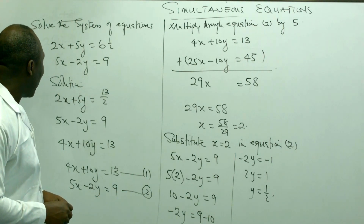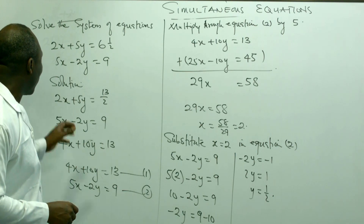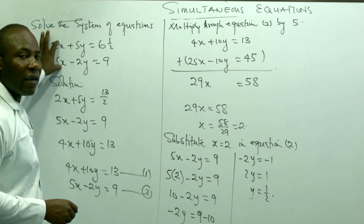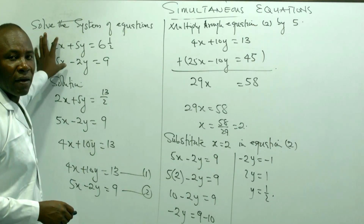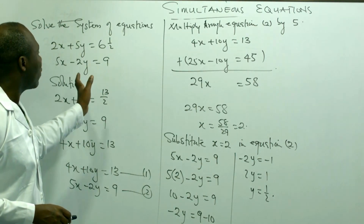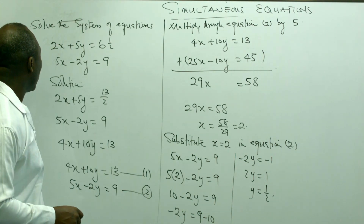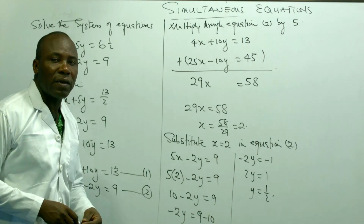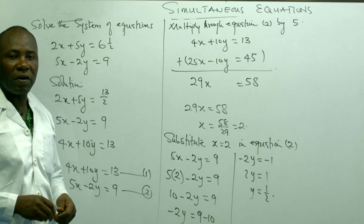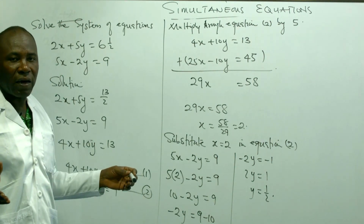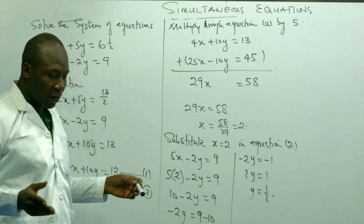Another person could also have decided to eliminate x first instead of y, and then when finished, continue to find the other variable. That is how it works — easy.